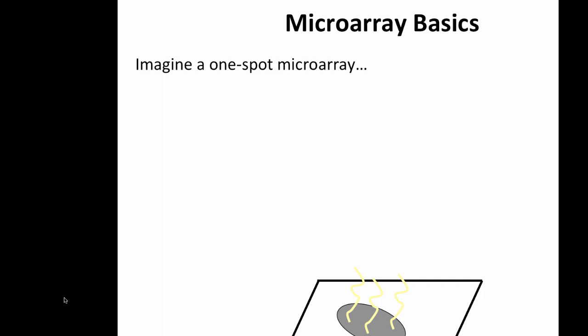Once you get past sample prep, you'll start saying: I have a microarray and I'm trying to process it — what does that actually look like? This is a conceptual one-spot microarray for terminology and scale-up. There's a glass substrate chip, and on that chip there is a feature. The feature represents a specific oligonucleotide sequence represented many times by different probes. The probes are attached to the chip, the feature is the collection of probes, and the chip is the glass substrate.